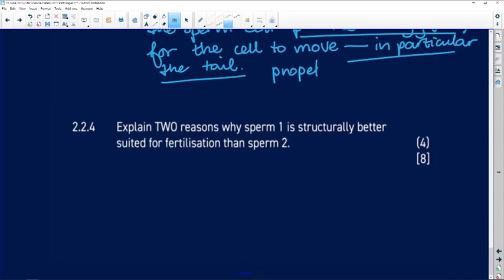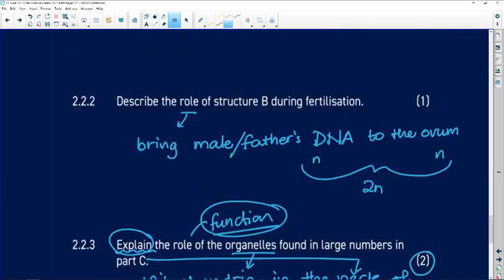2.2.4. Explain two reasons. We're going to give one, two reasons why sperm one is structurally better suited for fertilization than sperm two. And look here, four marks. So we need to give two points and two points in order to earn our four marks here. So let's go back to the pictures again.